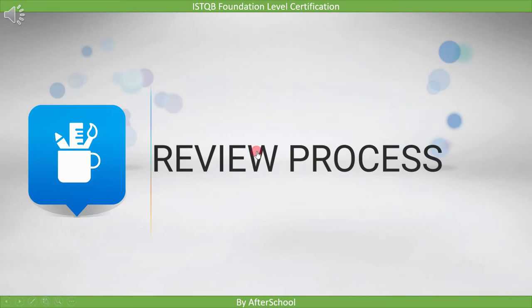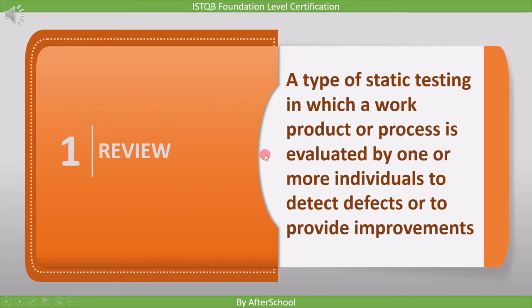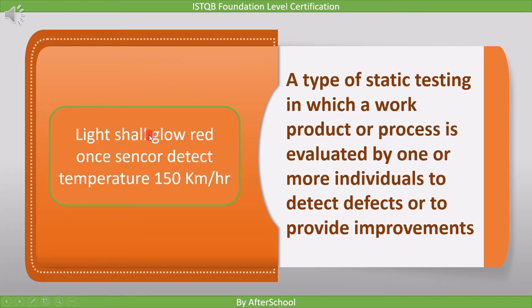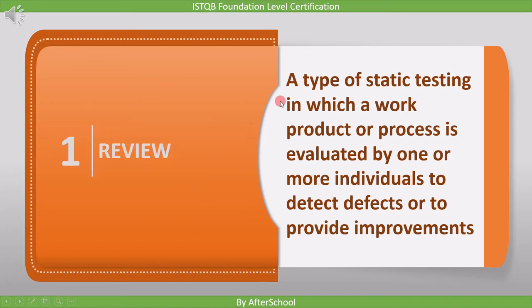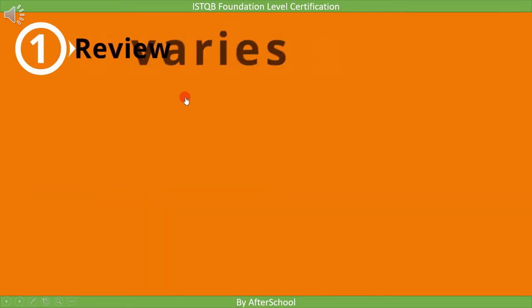In this lecture we will see an overview of the review process. Let's first understand what is a review. Review is a type of static testing in which a work product or process is evaluated by one or more individuals to detect defects or to provide improvements. For example, in the requirement stage, the requirement is our work product, so we have to evaluate it to find defects. By doing this we improve the work product.